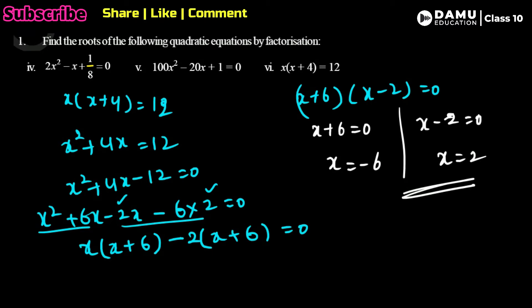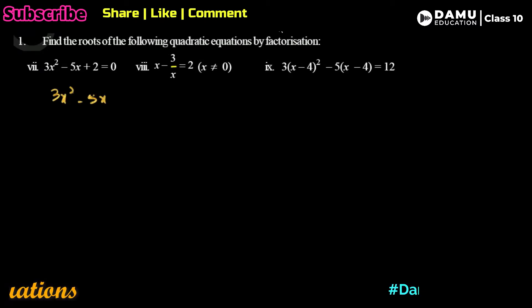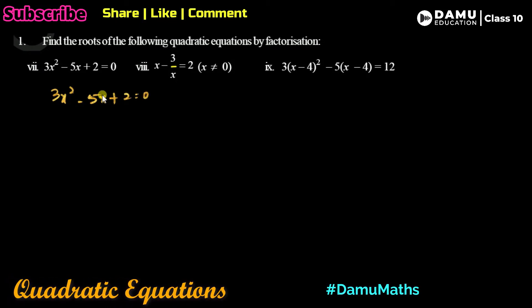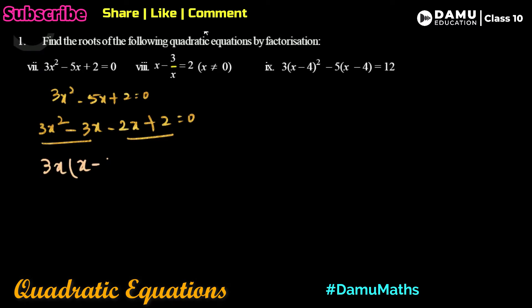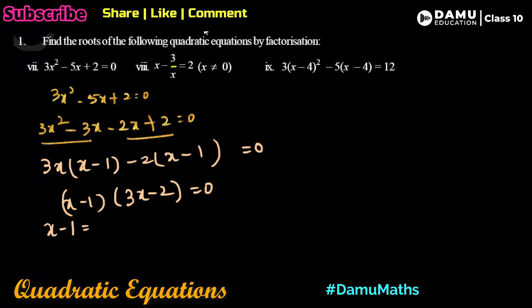The seventh problem is 3x² - 5x + 2 = 0. We split the middle term taking factors 3 and 2: write 3x² - 3x - 2x + 2 = 0, since -3x - 2x = -5x. Grouping: take common 3x from the first group giving 3x(x - 1), and take common 2 from the second group giving -2(x - 1). So (x - 1)(3x - 2) = 0. Either x - 1 = 0 giving x = 1, or 3x - 2 = 0 giving x = 2/3.